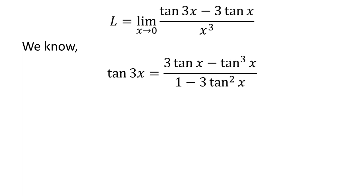We know the trigonometry identity: tangent of 3 times x is equal to 3 times tangent of x minus cube of tangent of x upon 1 minus 3 times square of tangent of x. This trigonometry identity has been verified in the video appearing in the upper right corner, and the link is also given in the description section.